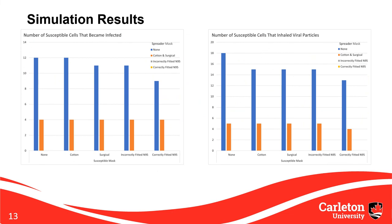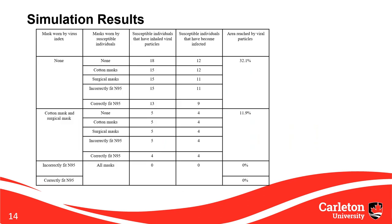Looking at the full results graph, when the spreader wears an N95 respirator — whether fitted correctly or not — there are no infections and no receivers inhale any viral particles. This is due to the very low shed values: 5% when fitted incorrectly and 0% when fitted correctly, so particle spread is low enough that no particles reach any receivers. For the remaining data, when the spreader wears no mask, infections drop from 12 to 9 depending on receiver masks, but we see a much larger drop when the spreader wears a cotton or surgical mask. A full table of results and visualizations of all scenarios are provided in the paper.